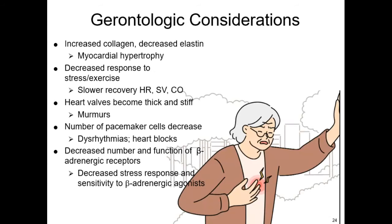The risk of cardiovascular disease increases with age. Coronary artery disease is the most common problem, due to atherosclerosis, and cardiovascular disease is the leading cause of death in adults over 65. These changes can be a result of aging, disease, environmental factors, and lifetime behaviors. As we get older, we have increased collagen, decreased elastin, leading to cardiac hypertrophy. Older patients have a harder time recovering their heart rate, have a decreased stress response, end up with more murmurs due to thick stiff valves, and lose pacemaker cells — making dysrhythmias more likely.